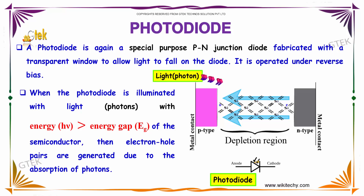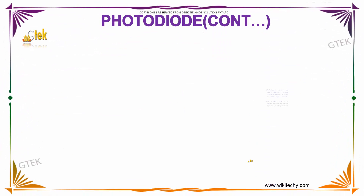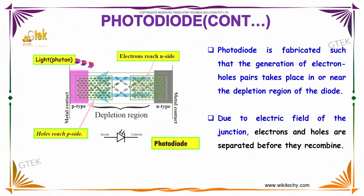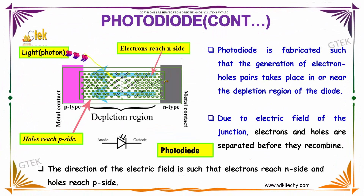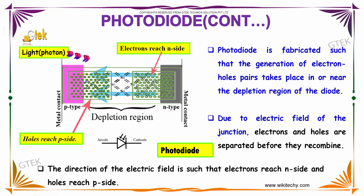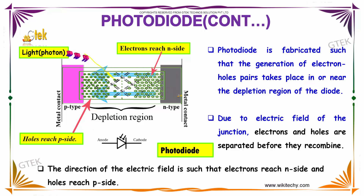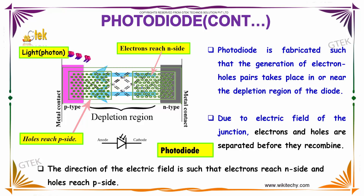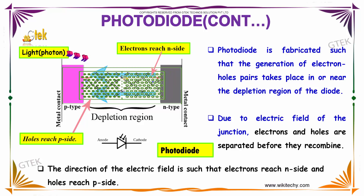Lights are passing in. The photodiode is fabricated such that the generation of electron-hole pairs takes place in or near the depletion region of the diode.